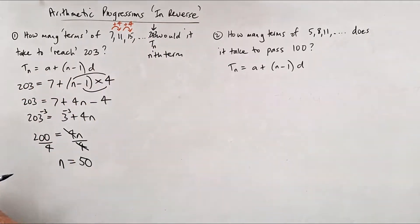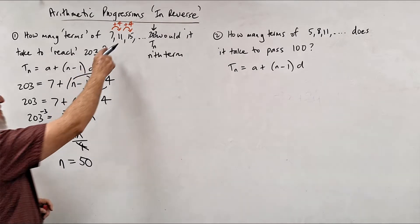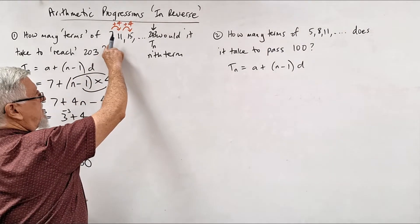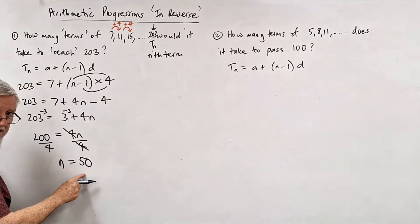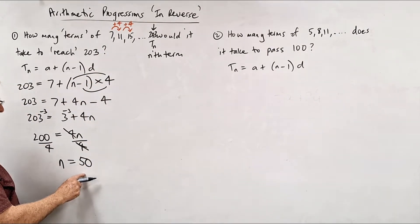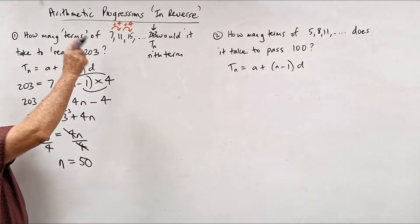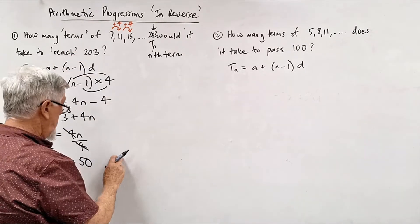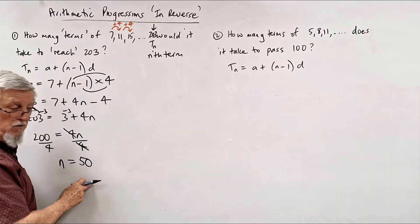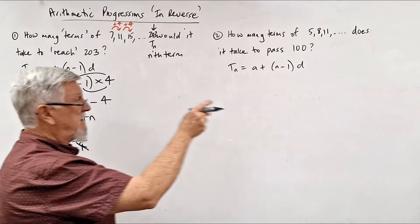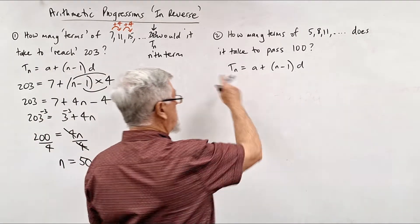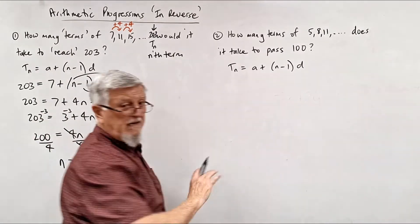Be careful though: if the question asked how many days it takes to reach $203 when you've already put $7 in the bank, you've already got the first term. So it wouldn't take 50 days — it would take 49 days. But this question just asked which term it is, so n = 50 is the answer.